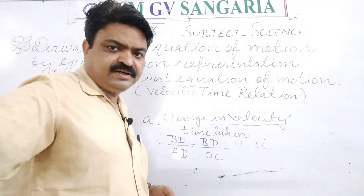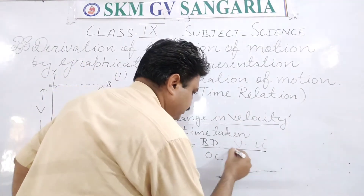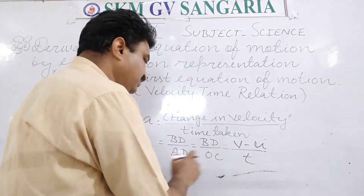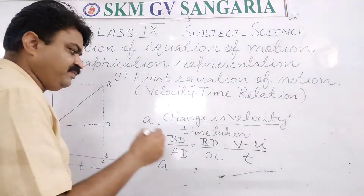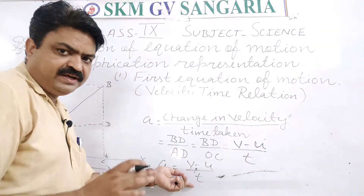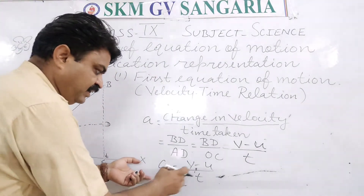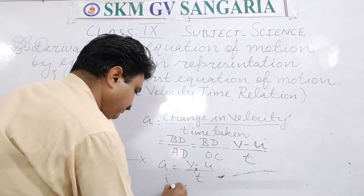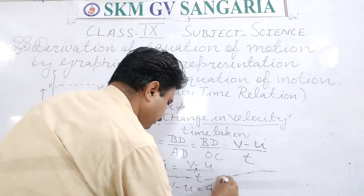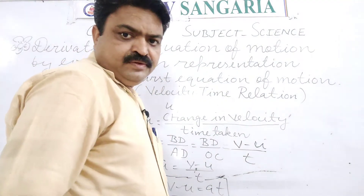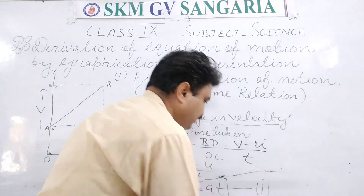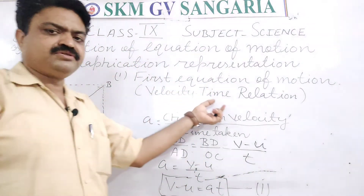BD here equals V minus U, and OC equals time T. So the equation we get is: acceleration A = (V - U) / T, which gives us V - U = AT. This is the first equation of motion, and it indicates the relation between velocity and time.